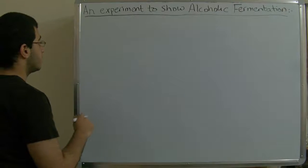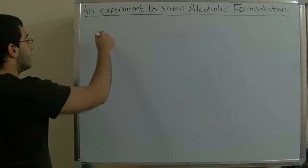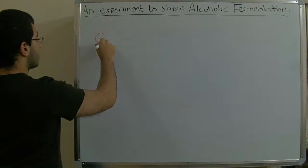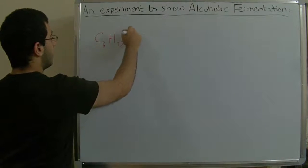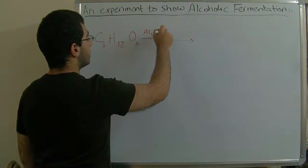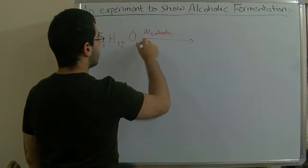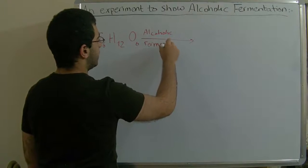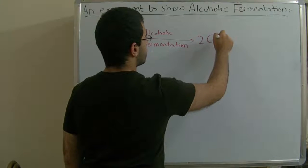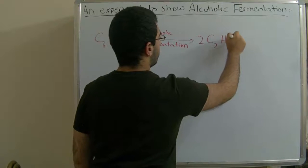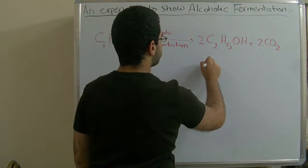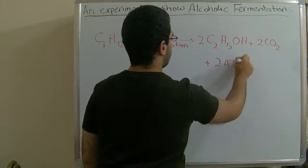The interpretation is, for example, glucose molecules C6H12O6, during the alcohol fermentation with the effect of the yeast fungus, we have 2 C2H5OH plus 2 CO2 plus 2 ATP molecules.